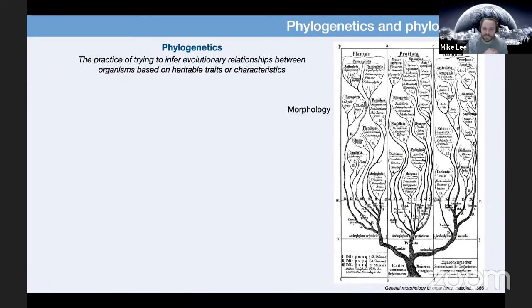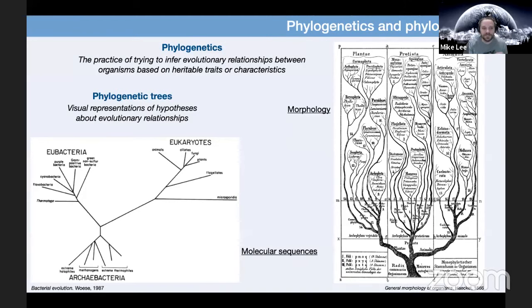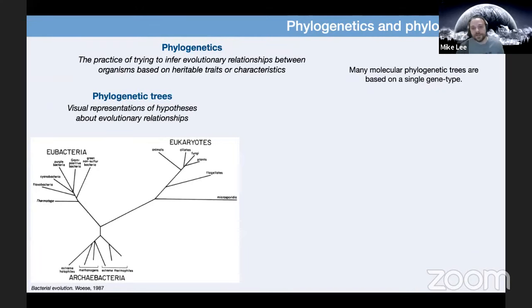Morphology — just how things look — wasn't as helpful when we got into microbial life. It was Carl Woese who helped pioneer the use of molecular data in phylogenetics, which allowed him to generate this tree, prompting him to realize and then champion that there seem to be three distinct overall clades of life, and specifically that archaea and bacteria should be recognized as distinct. Regardless of how trees are made, phylogenetic trees are just visual representations of hypotheses about evolutionary relationships. Many phylogenetic trees, just like Woese's, are based on a single gene type.